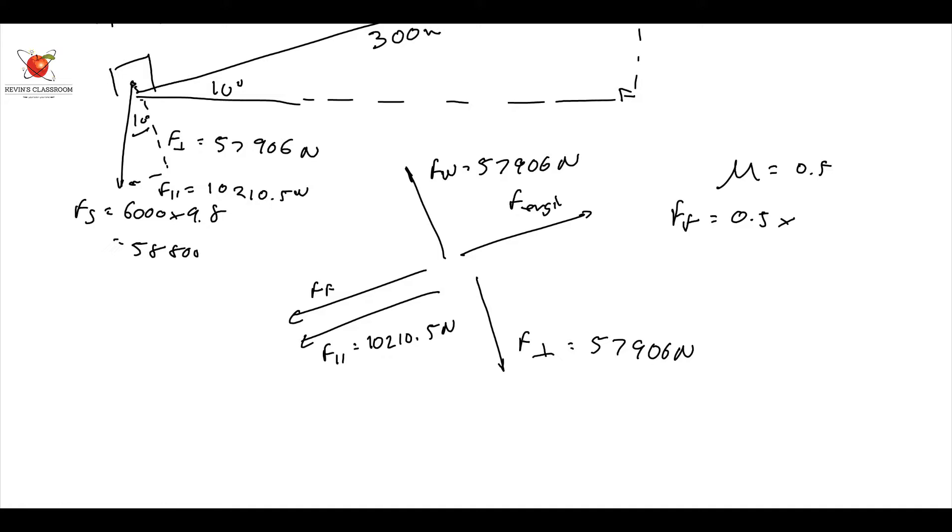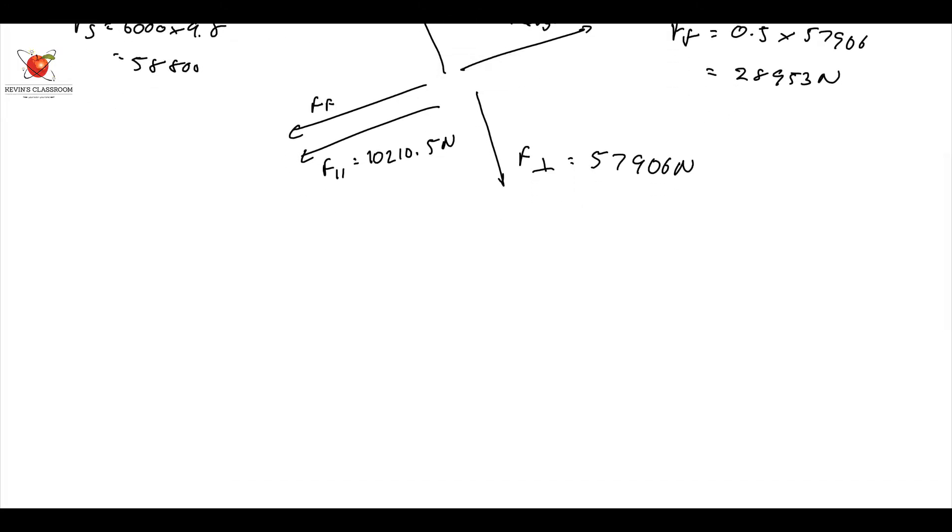I can now say okie dokie. Therefore, my F of friction is going to be 0.5 times 57,906. And my FF comes out to be 28,953. Ok, so we've now got everybody. Let's have a look at the energy equation. The energy equation that we're going to be looking at is the work done by non-conservative forces is equal to delta Ek plus delta Ep. I like to think of this as work done to accelerate or decelerate, work done to gain or lose Ep. Alright, let's start.